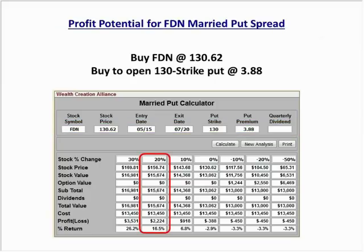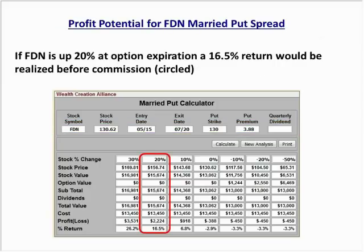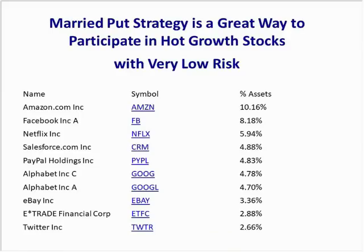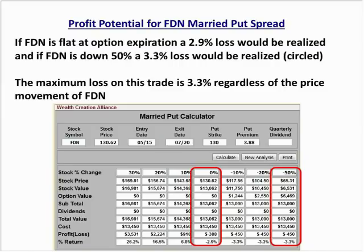If FDN is up 20%, we'll have a 16.5% return. We give up some of the return potential with the married put, but we limit our maximum loss on this trade to 3.3%. So we're participating in stocks like Amazon, Facebook, Netflix, and Salesforce and only risking 3.3% on the trade. It's a great way to participate in these strong sectors with very small risk.